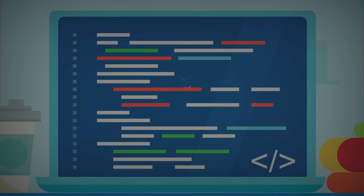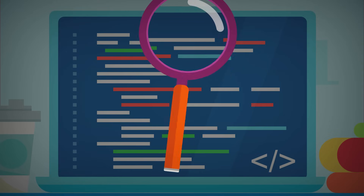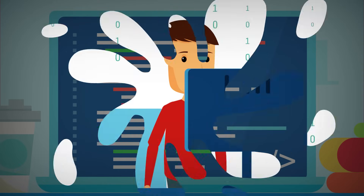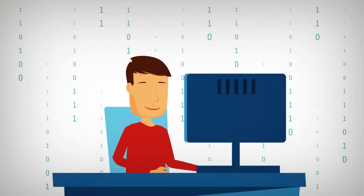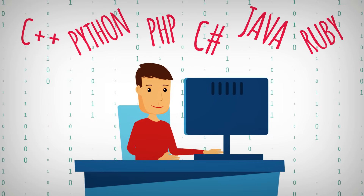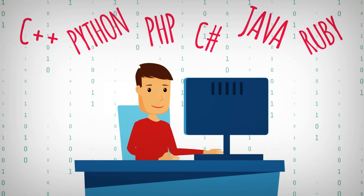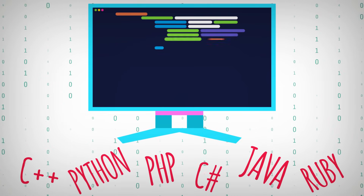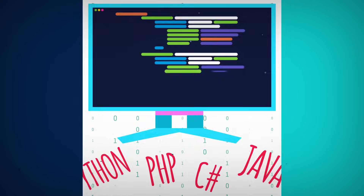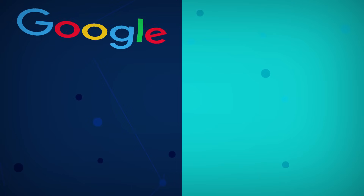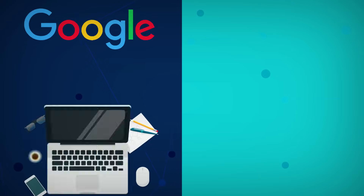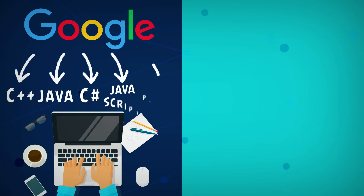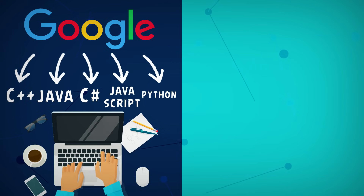I have also discovered that there are different coding languages. Programmers use one or more computer programming languages to give these instructions to computers. For example, programmers working at Google might use C++, Java, JavaScript or Python.